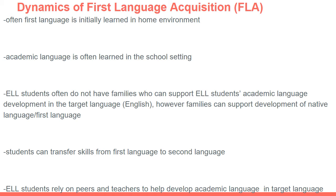Studies show students learn English at a much faster rate if they have developed their first language proficiently. Students in bilingual classrooms who learned English 50% of the time and Spanish 50% — because they developed their native language, Spanish, and became fully proficient — were able to transfer their skills. They actually learned more English than someone in an all-ESL class with 100% English instruction.